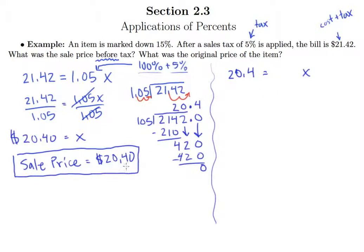Since this is the sale price, sale price is the original price minus the discount. So we need the percent to reflect the same thing that the amount of sale price is representing. So we need to have the original minus the discount represented as a percent.